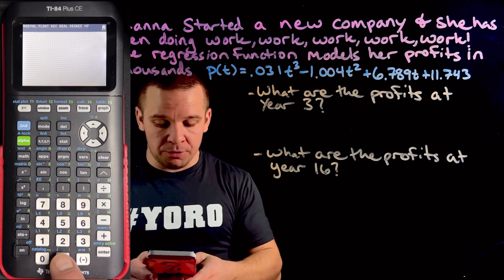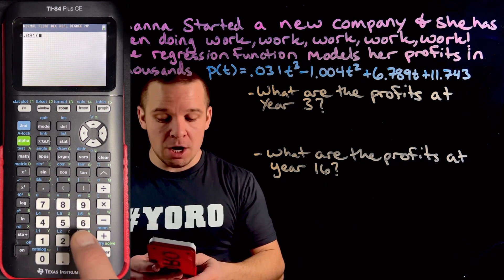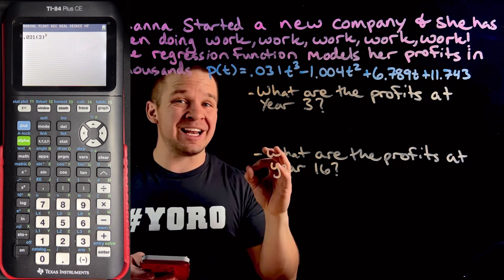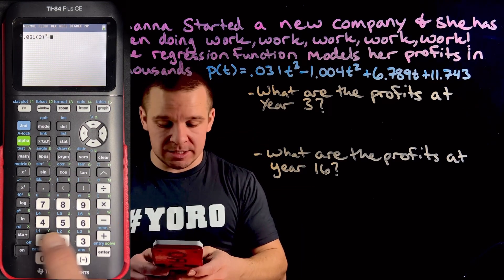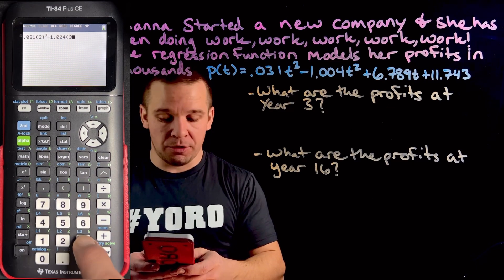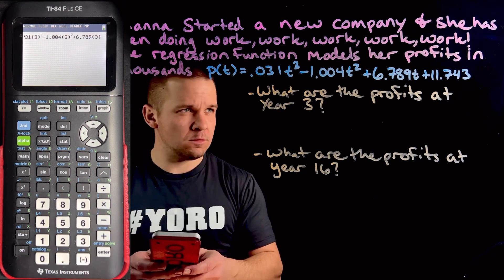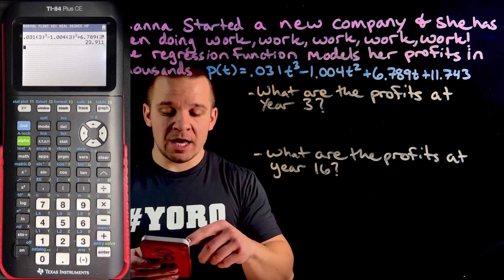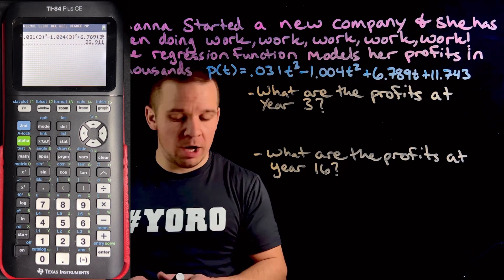In place of T in all three of these spots, I'm going to throw in three. So we have 0.031 parentheses three, close them, raised to the third. Then I'm going to arrow over to get into the same line. Then we have minus 1.004 parentheses three. I'm going to hit enter and we got 23.911.